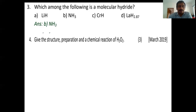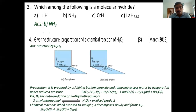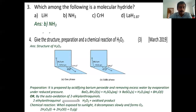Next question: Give the structure, preparation, and a chemical reaction of H2O2. The structure is an open-book structure. You draw oxygen at the joint, then single bond hydrogen on each side. Two structures are given — gas phase and solid phase — but you just need to draw the open-book structure and write any one figure. The angles and bond lengths are not necessary but will help you get higher marks.